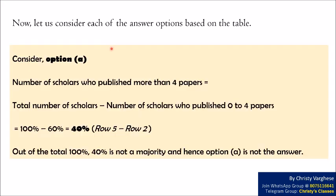Consider option A, which tells that majority of the scholars published more than four papers. Number of scholars who published more than four papers equals total number of scholars minus number of scholars who published zero to four papers. This equals 100% minus 60%, which equals 40%. Out of the total 100%, 40% is not a majority and hence option A is not the answer.